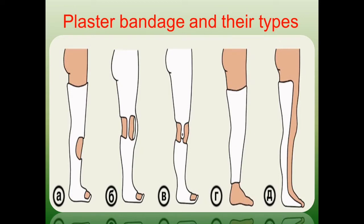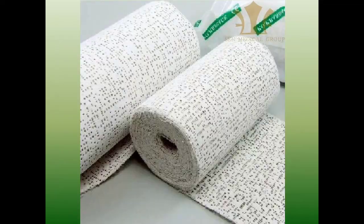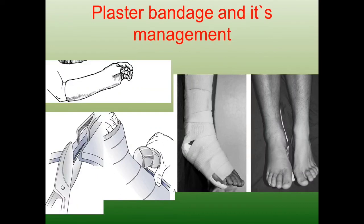Semi-circular POP bandages are also used after surgery when additional immobilization is needed — for example when K-wires or screws alone are insufficient. The POP slabs are wetted in water for one to two minutes before application. The result is a semi-circular bandage reinforced with elastic bandages. Removal is done with special cast cutters or electric instruments cutting along the bandage.